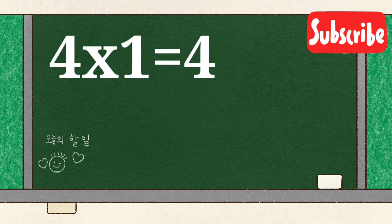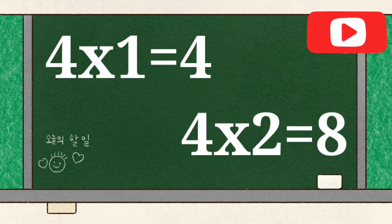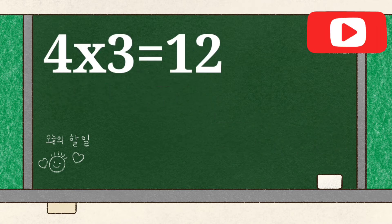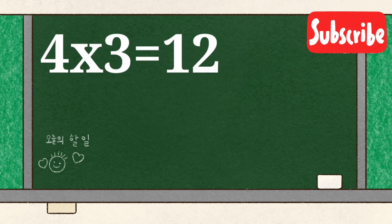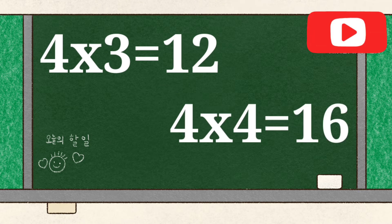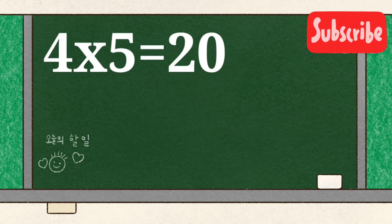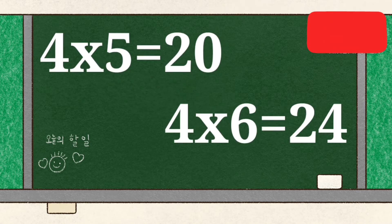4 1's are 4, 4 2's are 8, 4 3's are 12, 4 4's are 16, 4 5's are 20,